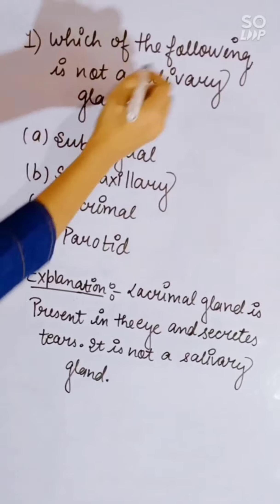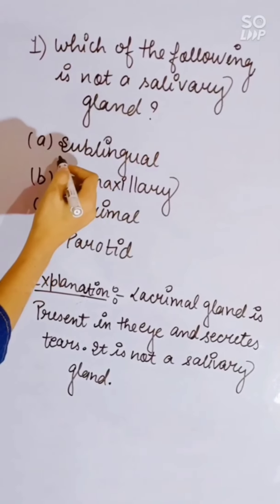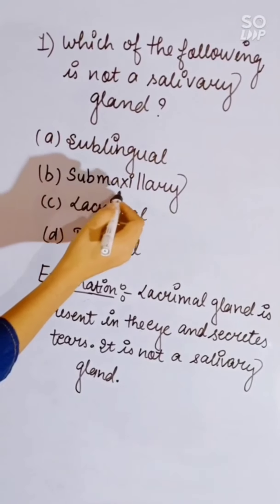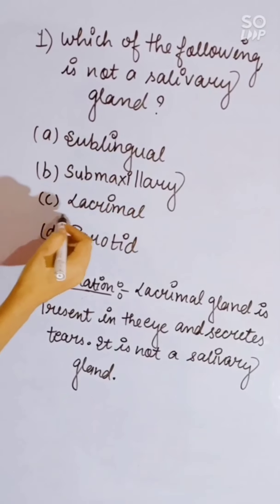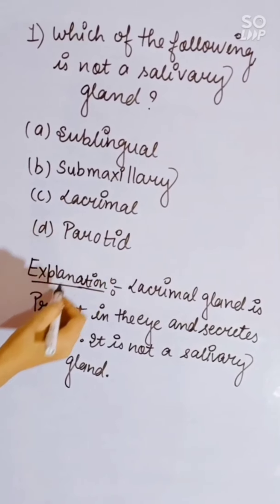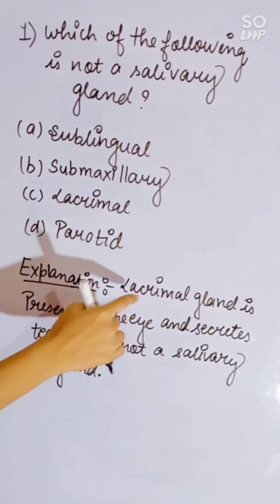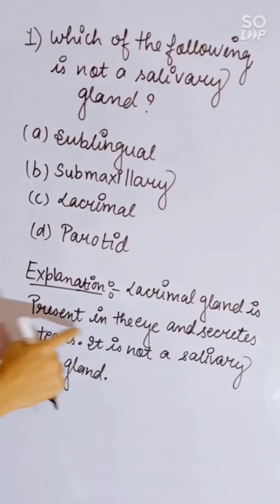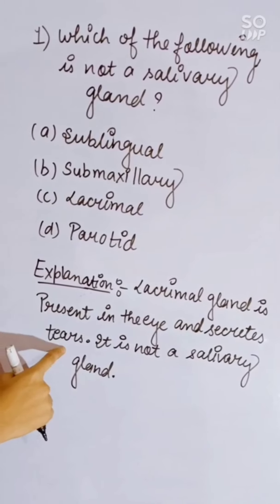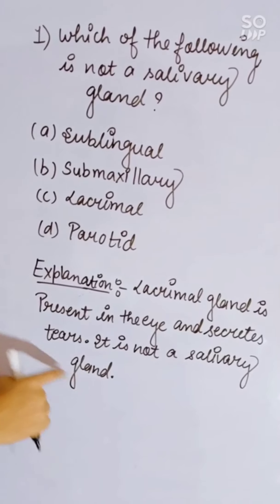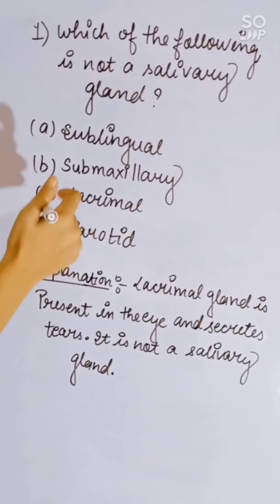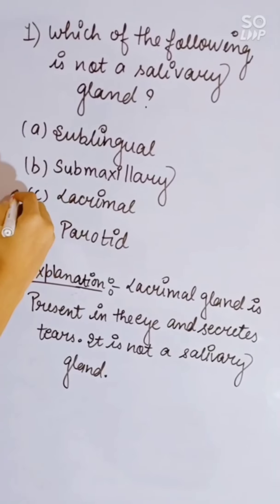Which of the following is not a salivary gland? Options: sublingual, submaxillary, lacrimal, or parotid. The lacrimal gland is present in the eye and secretes tears — it is not a salivary gland. Correct answer is lacrimal.